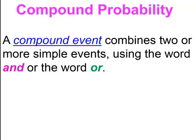Compound probabilities. A compound event combines two or more simple events using the word 'and' or the word 'or'.